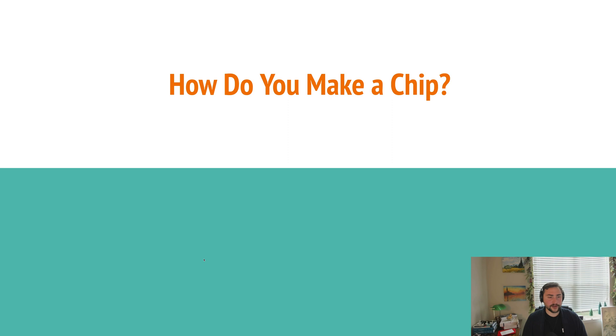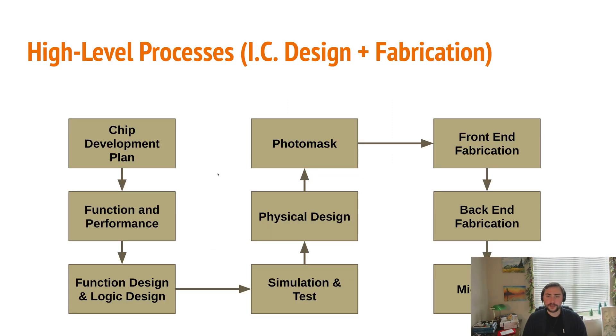How do we go from a raw piece of silicon all the way to a microchip? At a high level, we can lay out this process of IC design and fabrication into nine steps.